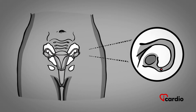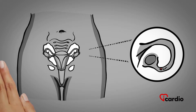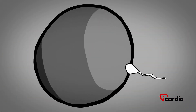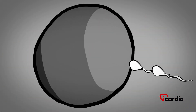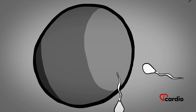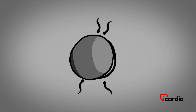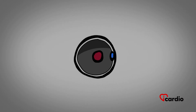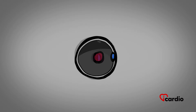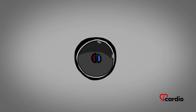At that point, the ovum is not attached to anything — it is mobile. As soon as one sperm penetrates the ovum, their membranes unite, and the ovum blocks any other sperm from entering. The genetic material of the ovum and the sperm combines, and the sex is determined.